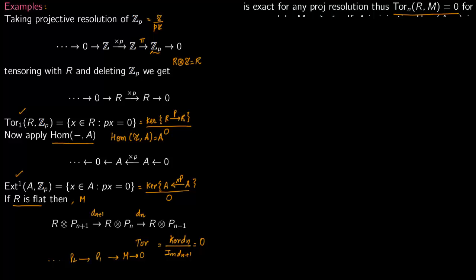Similarly, this is 0 for all n greater or equal to 1, because for 0 you just get R tensor with M.